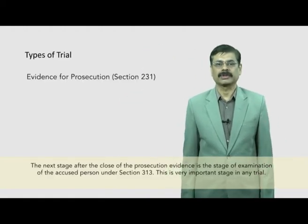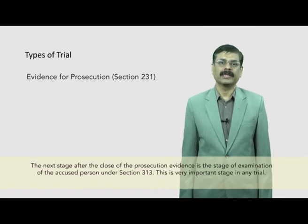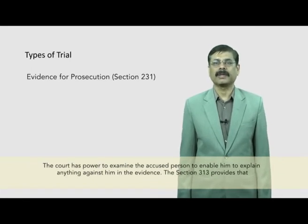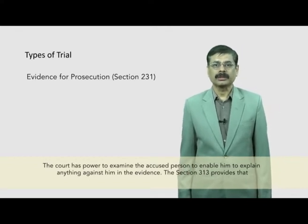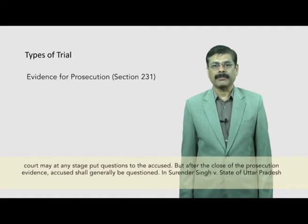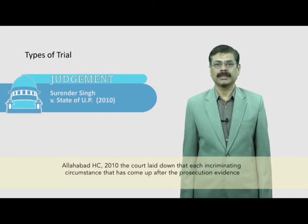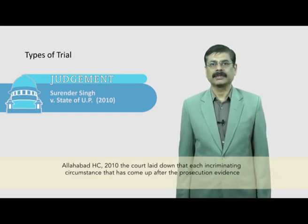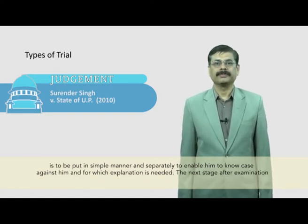The next stage, after the close of prosecution evidence, is the examination of the accused person under section 313 — a very important stage in any trial. The court has power to examine the accused to enable him to explain anything against him in the evidence. Section 313 provides that the court may at any stage put questions to the accused, but after the close of prosecution evidence, the accused shall generally be questioned. In Surinder Singh versus State of Uttar Pradesh, Allahabad High Court 2010, the court laid down that each incriminating circumstance that has come up after the prosecution evidence is to be put in a simple manner and separately to enable him to know the case against him and for which explanation is needed.